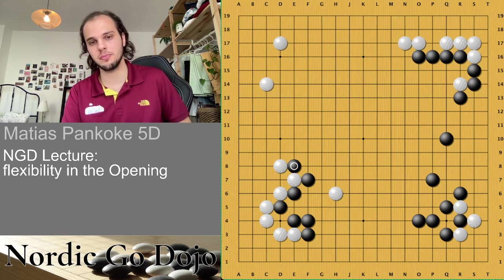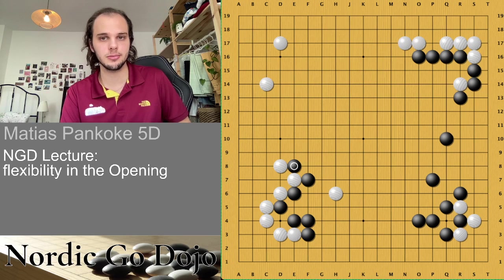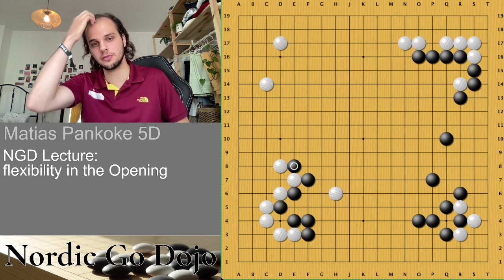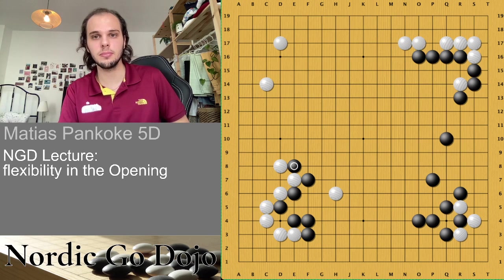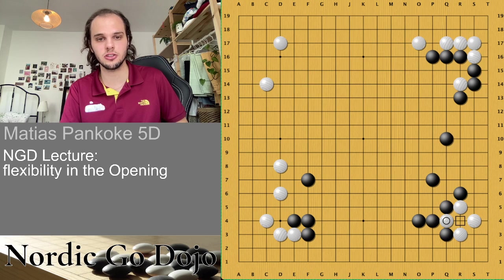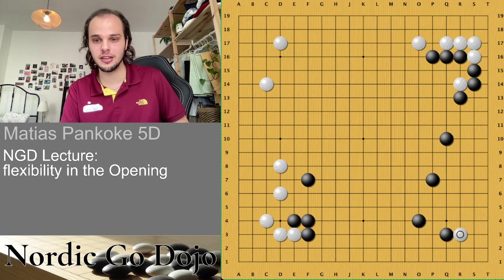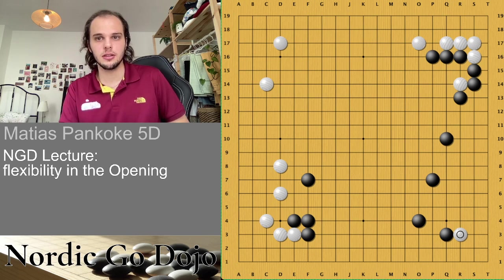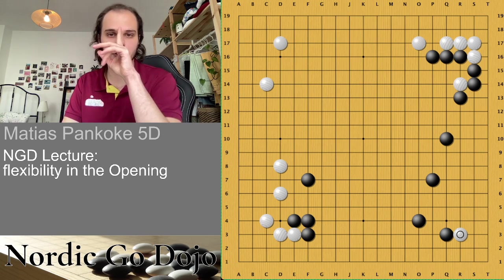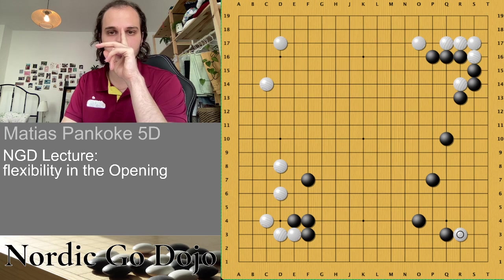It doesn't happen too often in openings — this is something that happens when there is such a huge moyo and you invade there. Let me see some comments — someone says: looks familiar, yes that's our game. I guess many of these games look familiar to Jeff and also to Anti. But let me show you another classic that I just realized is also about ko.